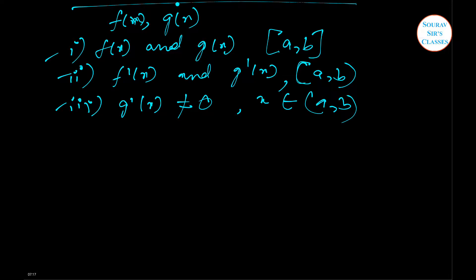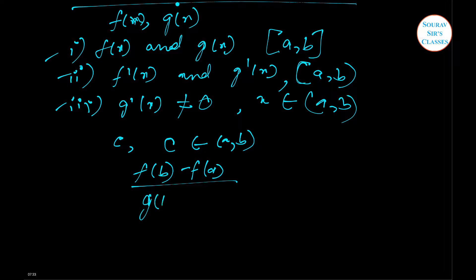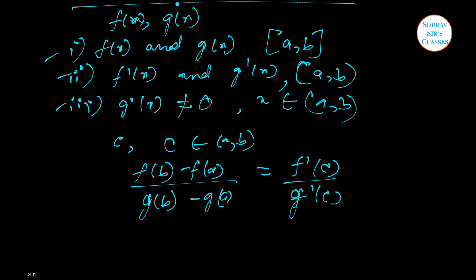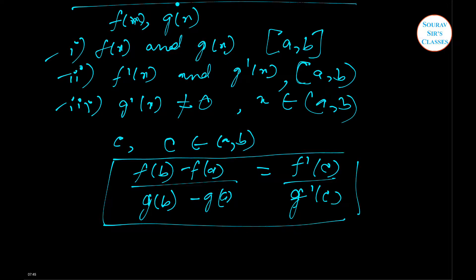If these three conditions are fulfilled, we are going to get a value c where c belongs to the open interval of a and b such that f(b) minus f(a) divided by g(b) minus g(a) equals f'(c) divided by g'(c). This is Cauchy's mean value theorem. For doing sums we just have to find which are the functions f(x) and g(x), verify they are continuous in the closed interval, their derivatives exist in the open interval, and g'(x) is not equal to 0. After that we can simply apply this theorem.